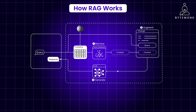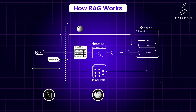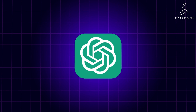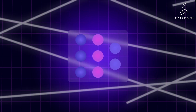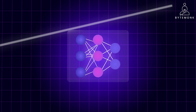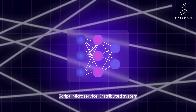Unlike traditional LLMs with static knowledge, RAG enables a dynamic interaction between models and external data. Your RAG system could pull data from internal documents, a public knowledge base like Wikipedia, or even real-time web searches. You might choose to use GPT-4, other open-source models, or even develop your own custom LLMs. You could implement RAG as a simple script, a microservice, or a complex distributed system, depending on your needs.